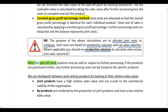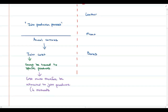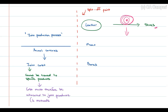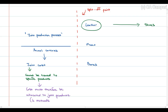After the split-off point, products can either be sold or processed further. If they are processed further, any further processing costs can be traced to the specific product. For example, if the company decides to process the leather further and convert it into shoes, any further processing costs incurred can be directly traced to shoes. So it's only the joint production costs that we need different methods to allocate, because we don't know what portion of those costs relates to which products.